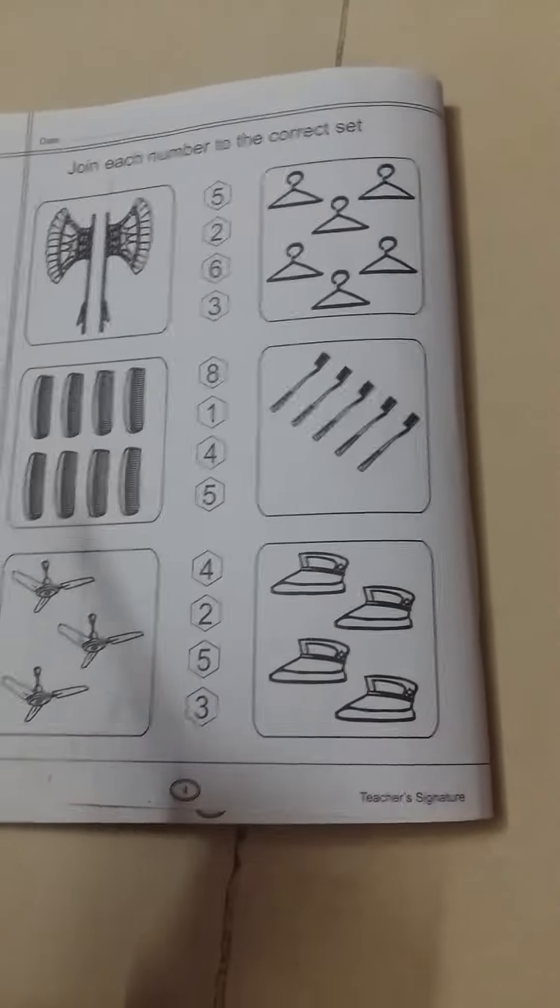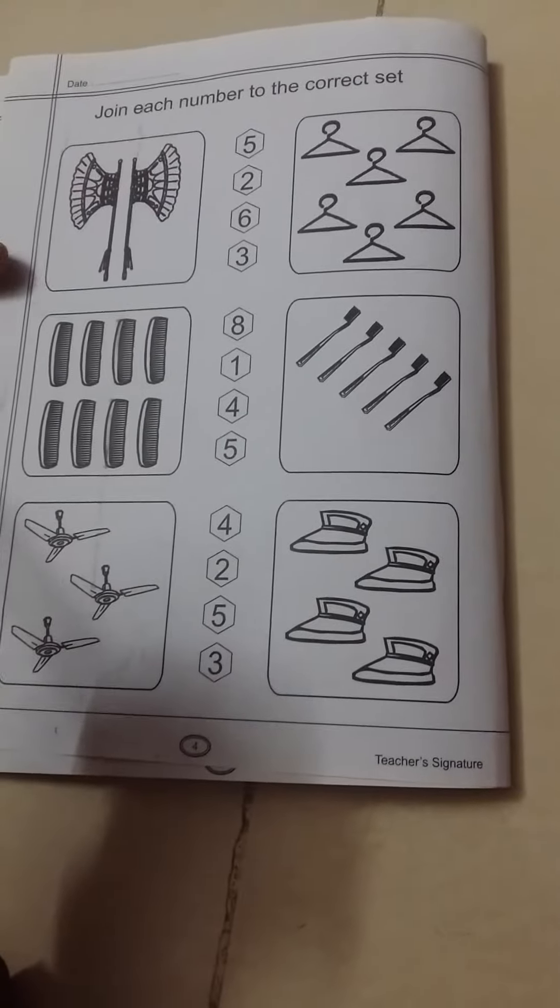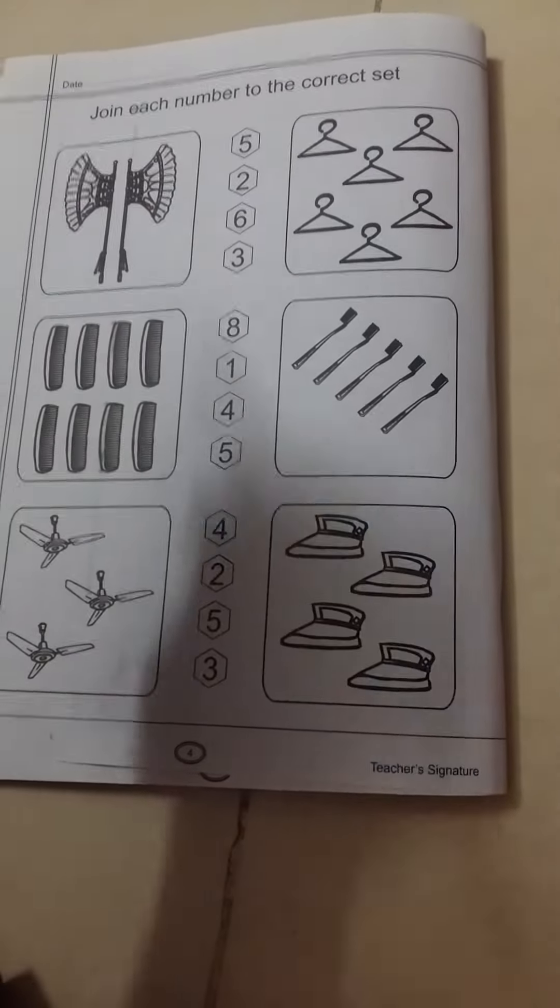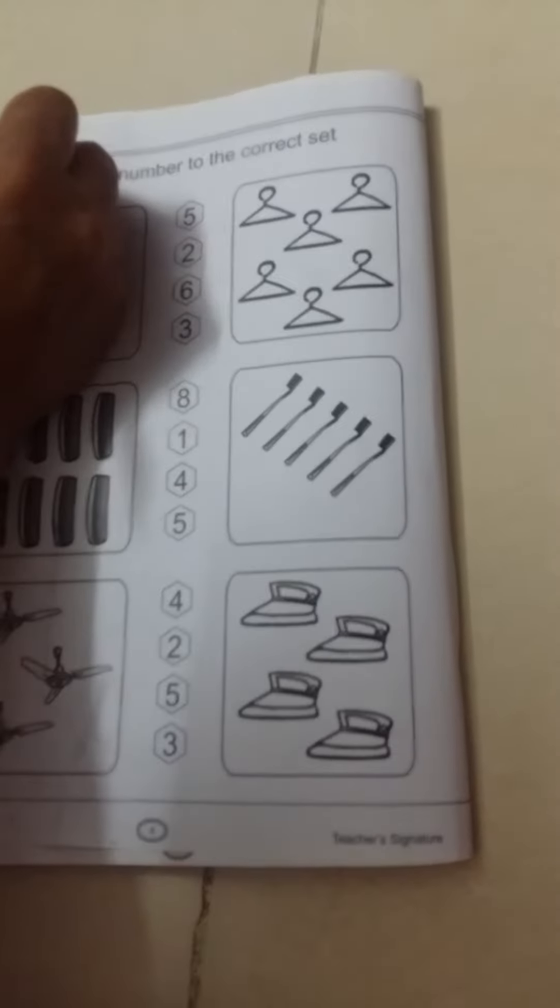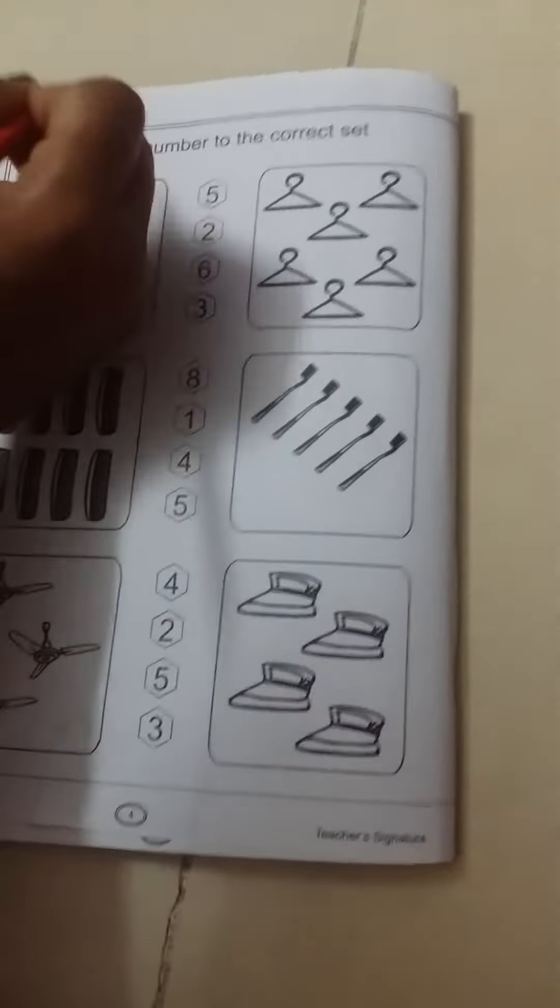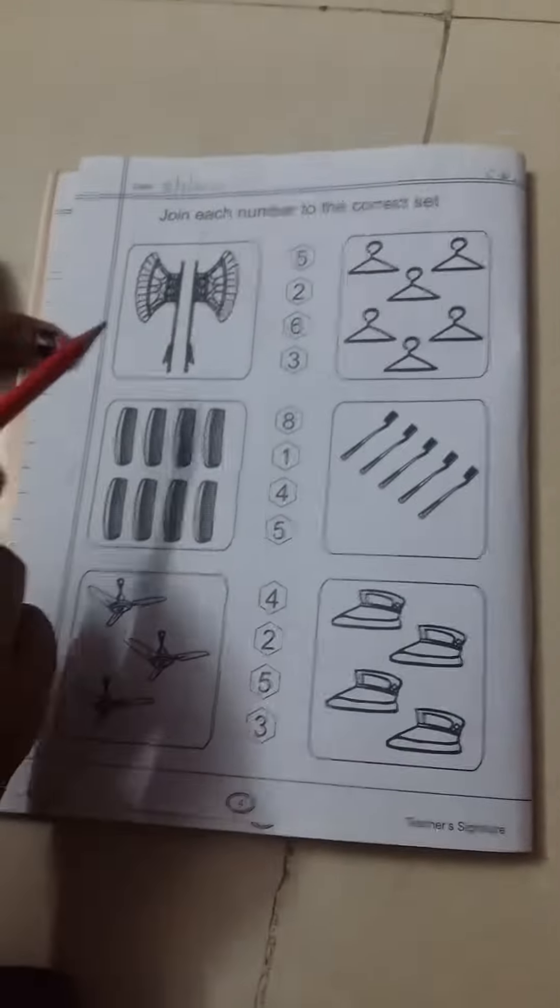First of all, we will write here the date. What is the date today? Today is July 7, 2020. And we will write here CW.